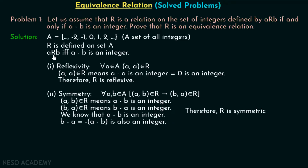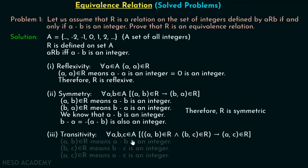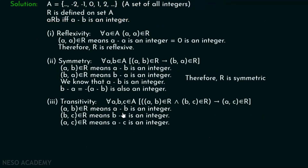Now let's see whether this relation R is transitive or not. According to the definition of transitivity: for all A, B, C belonging to set A, if (A, B) belongs to R and (B, C) belongs to R, then (A, C) must belong to R. (A, B) in R means A minus B is an integer. (B, C) in R means B minus C is an integer. We have to prove that A minus C is also an integer.